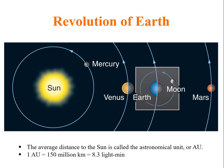The average distance to sun from Earth is called astronomical unit or AU. 1 AU is equal to 150 million kilometers or approximately 8.3 light minutes.